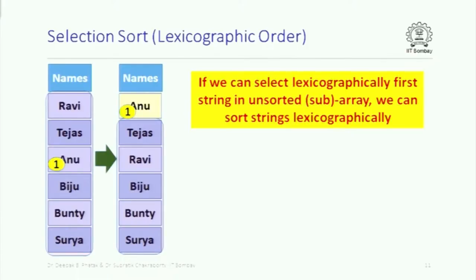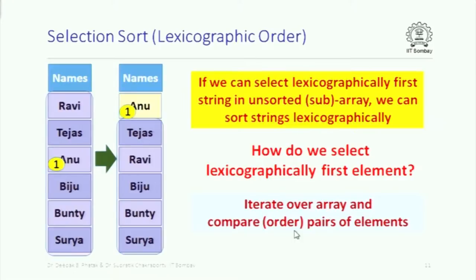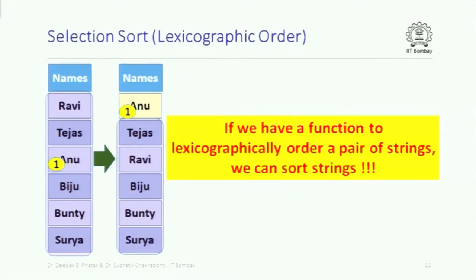If we can select the lexicographically first element in an unsorted subarray, we can apply the same idea as selection sort to lexicographically sort the array of strings. The basic idea is to determine what should be the first element. If we can figure out from a given array of strings what should appear first in dictionary order, we are done. Just as we found the maximum element by iterating and comparing pairs, we do the same here — iterate over the array and compare pairs of strings.